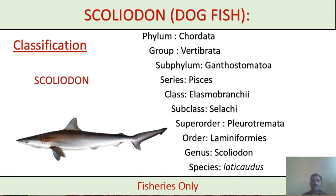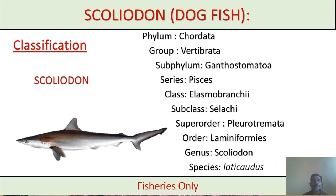The Scolidon belongs to phylum Chordata. Chordata has peculiar characters such as a dorsal tubular nerve chord or notochord, and paired gill slits are present. In group Vertebrata, the notochord is replaced by the vertebral column, two pairs of appendages are present, and the circulatory system is a closed circulatory system.